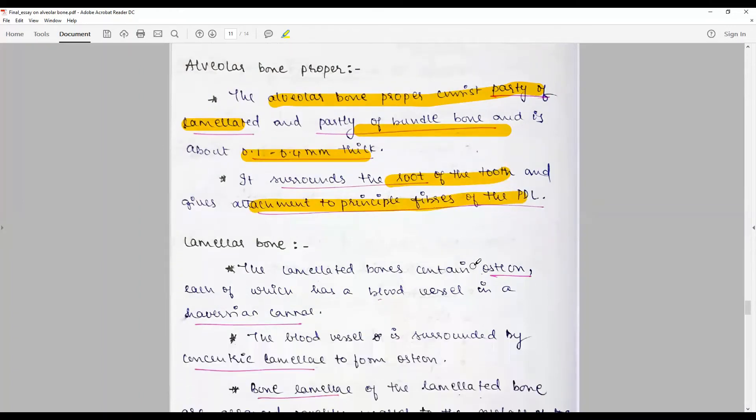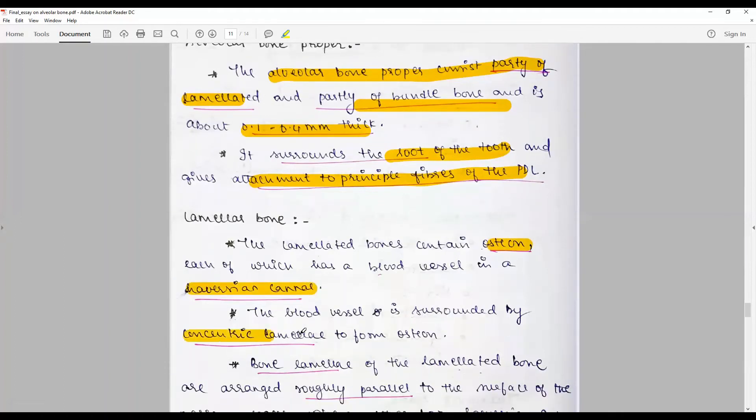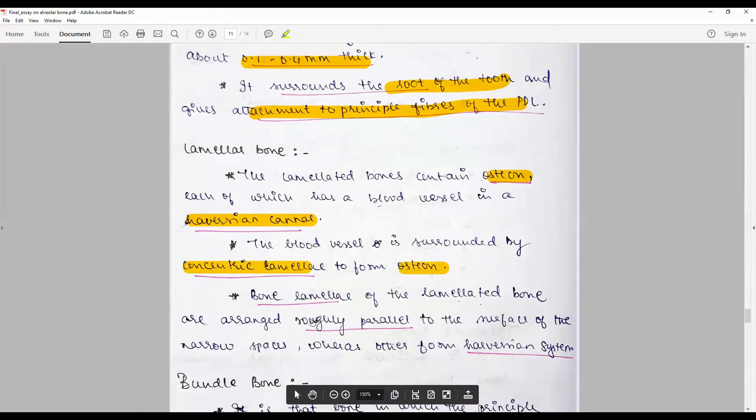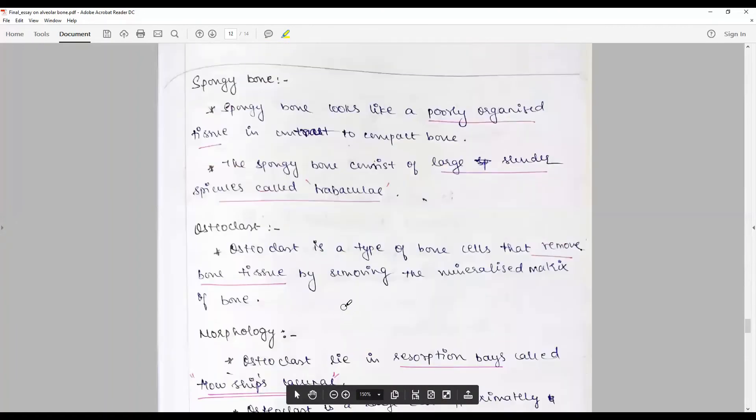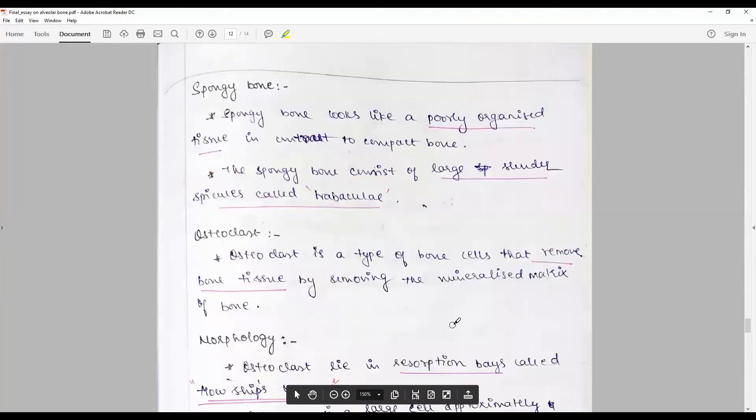Lamellar bone contains osteons which have blood vessels in the Haversian canals. The blood vessels are surrounded by concentric lamellae to form the osteon. The basic lamellae of the lamellated bone are roughly parallel to the surface of the root to form the Haversian system in the bundle bone in which principal fibers of the PDL are anchored.